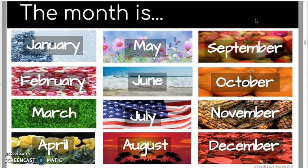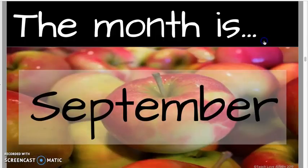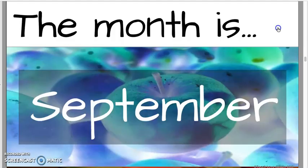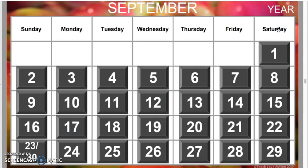Then we move on to the month. You can click on any one of the months and it will work. Let's go with September, and then you get that full sentence: 'The month is September.' I can click anywhere to move on.